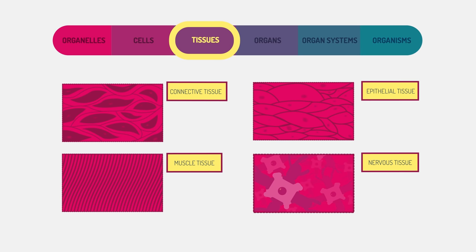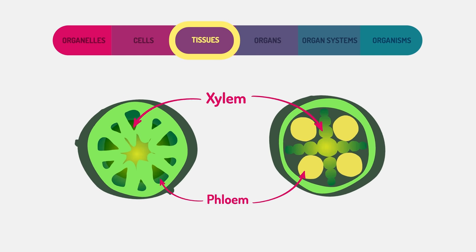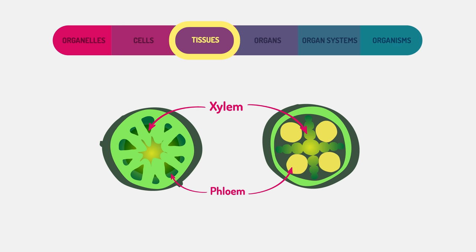Groups of cells then form together to create tissues. In humans, we have four main types of tissue. In plants, the xylem and phloem are examples of plant tissues.